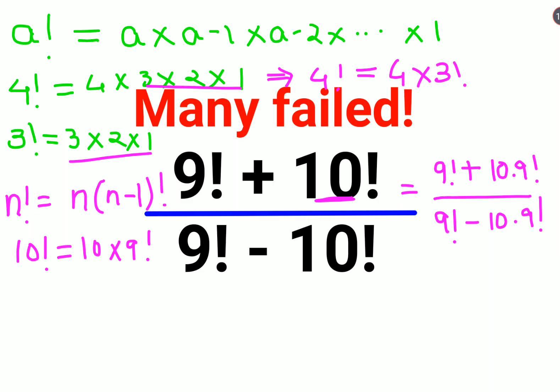So now if you see, I can take a few things common, which is 9 factorial can be taken out. I am left with 1 plus 10. Here again, 9 factorial has been taken out. I am left with 1 minus 10.